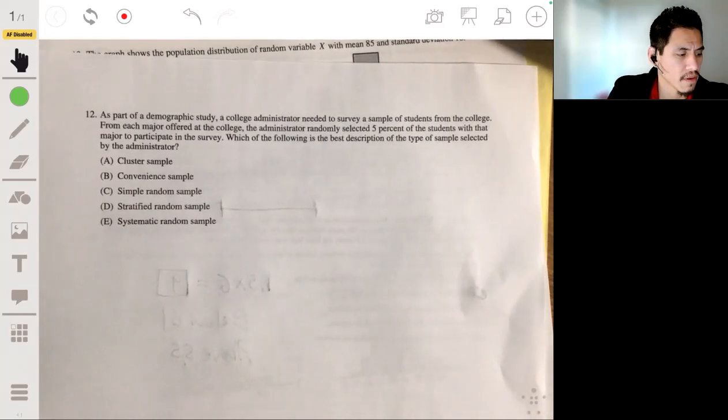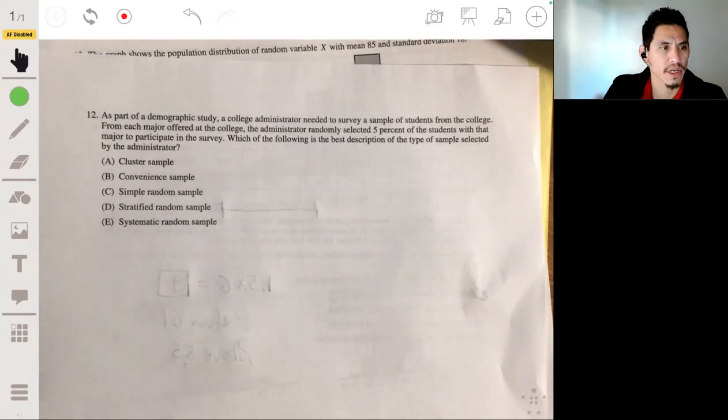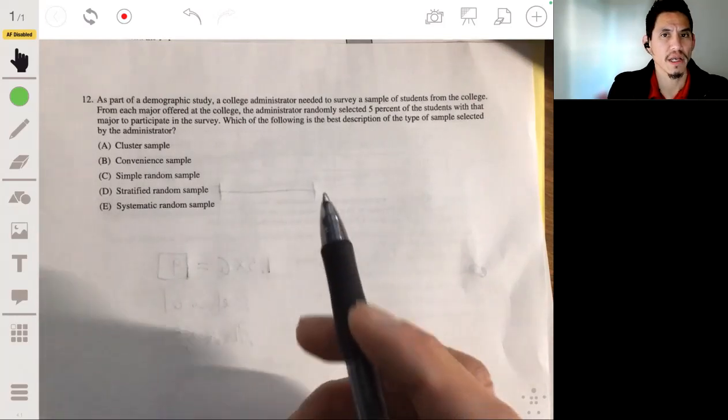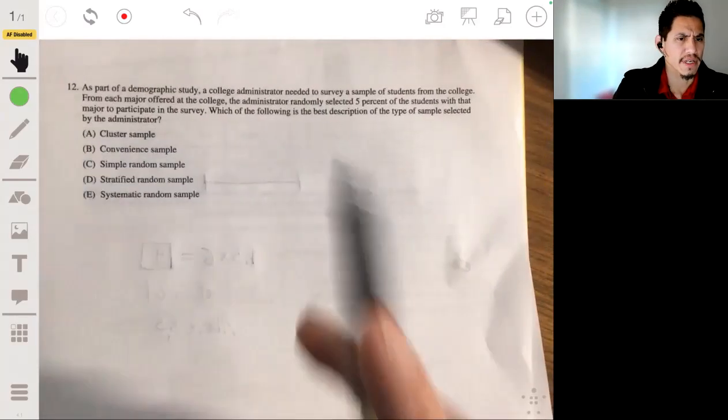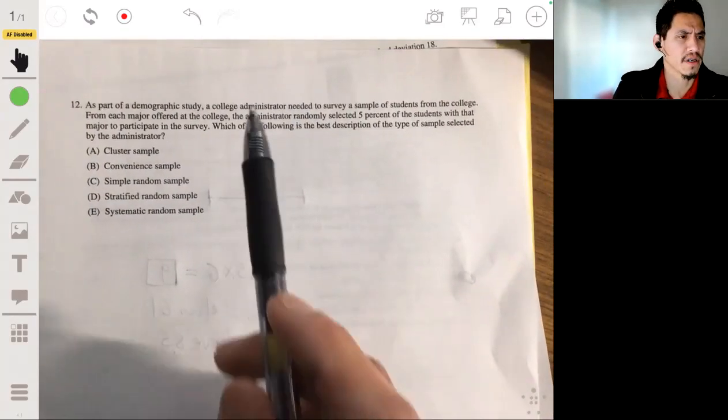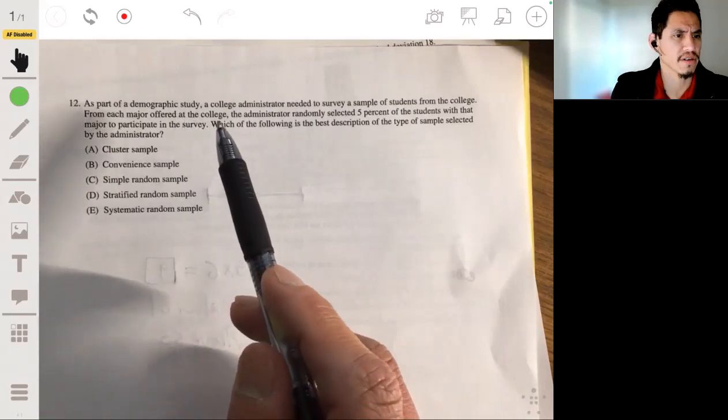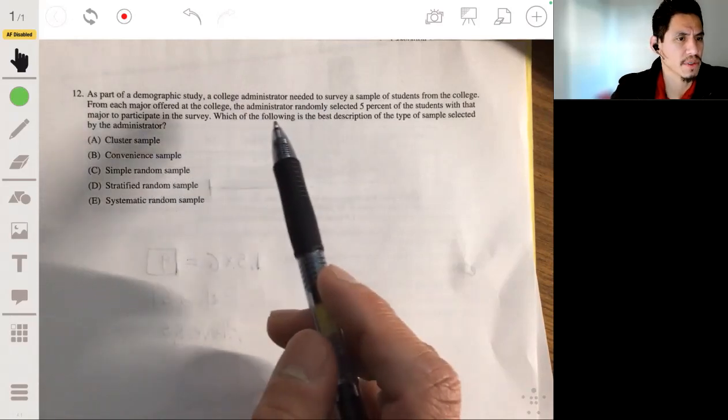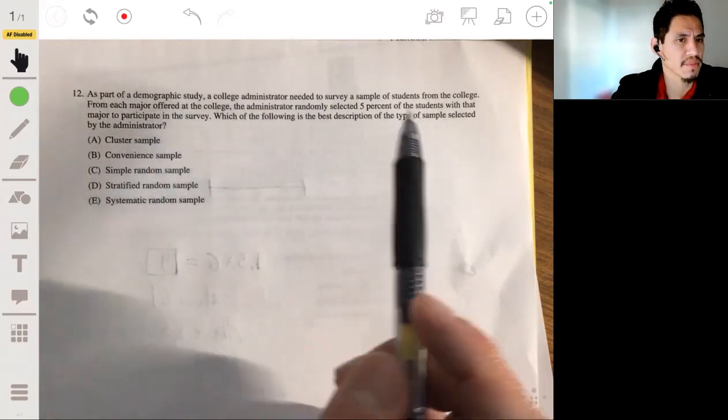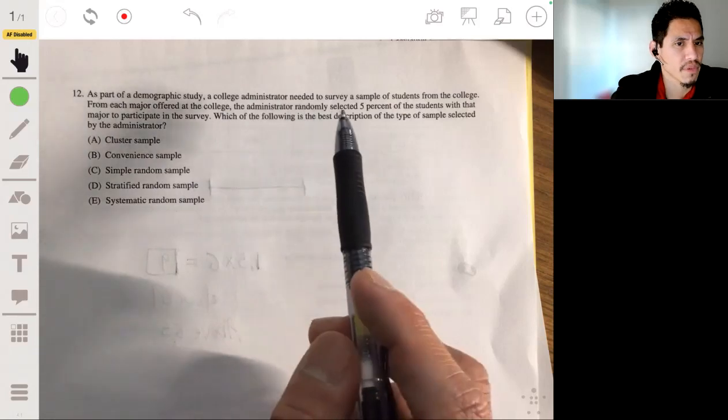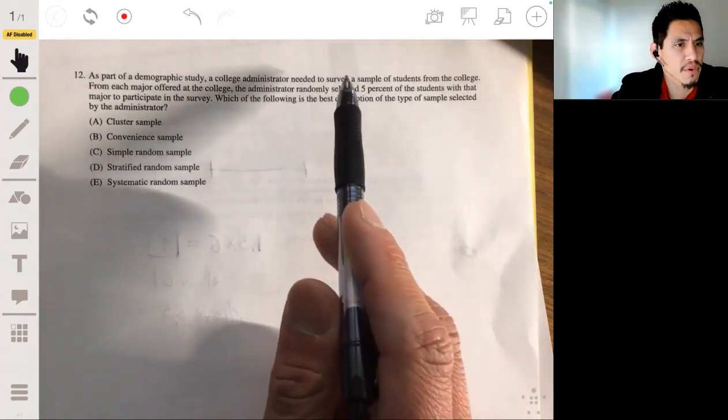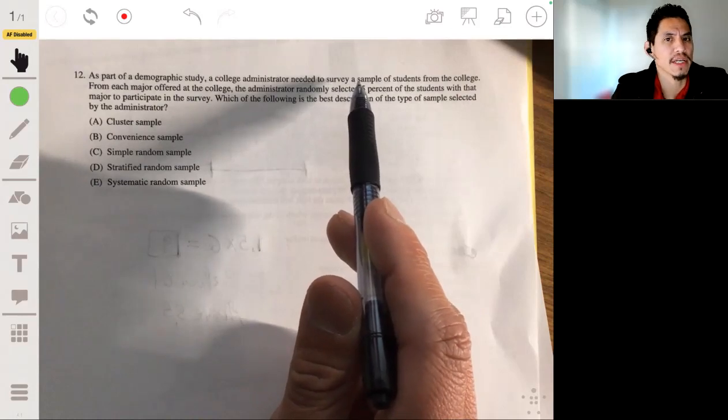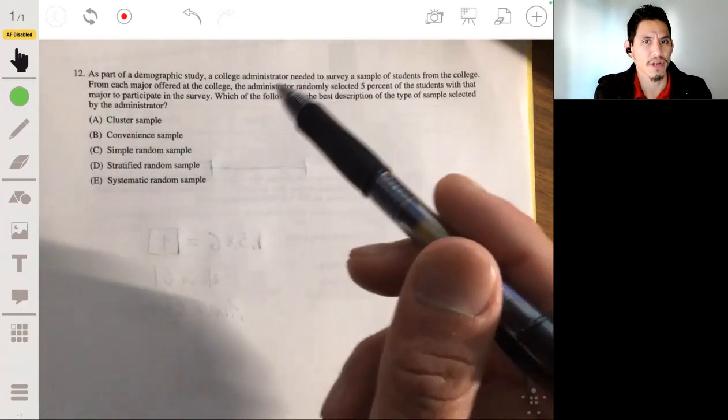Alright, 12. We got that as part of a demographic study, a college administrator needed to survey a sample of students from the college. From each major offered at the college, the administrator randomly selected 5% of the students with that major to participate in the survey. Which is following is the best description of the type of sample selected by the administrator. Okay, so you can see that they broke the sample survey into subgroups or into strata.